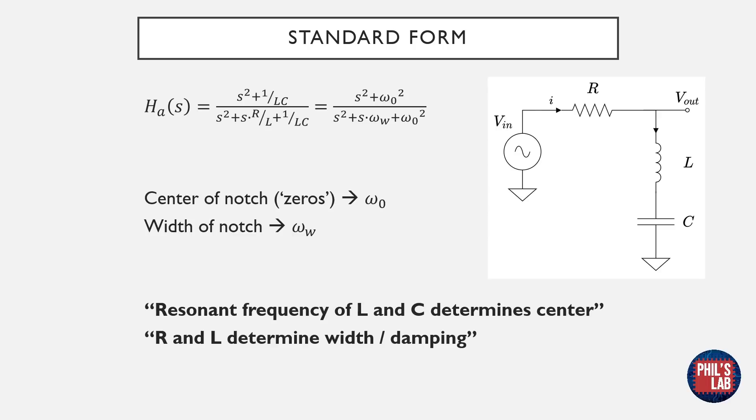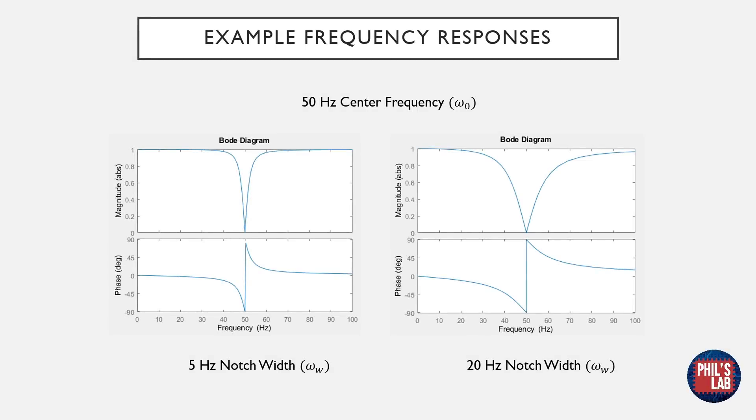The width of the notch, on the other hand, is determined by the resistance and the inductance, and can also be seen as some form of damping. Here are some example frequency responses for a notch filter, with a 50Hz centre frequency. On the left I've plotted the filter using a 5Hz notch width, and on the right one with a wider 20Hz notch width. Of course using a smaller notch width gives a much more selective filter. Notice that also with a wider notch width, the band around the centre frequency is somewhat asymmetrical.